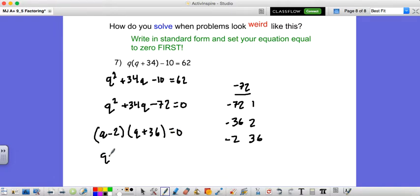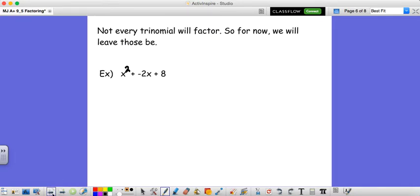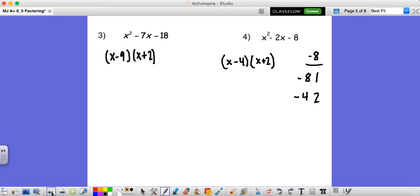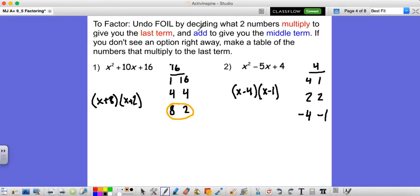So to solve, q is equal to 2 or q is equal to negative 36. So first write it in standard form and then you're just factoring. Once again, just to remember this is the big takeaway from 9.5. To factor, you're asking what two numbers multiply to give you the last term but add to give you the middle term. What two numbers multiply to 16, add to 10. Multiply to 4, add to negative 5. And from there on, you're home free. So that would conclude section 9.5.